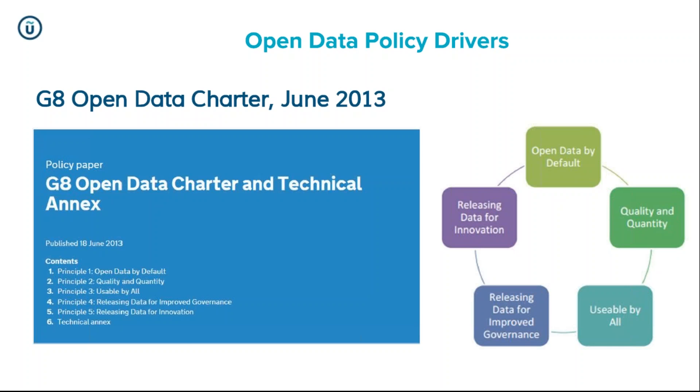That's the very core basis of open data. In Scotland we've got other pieces of legislation — we never say publish data that contravenes the Data Protection Act, so no personal data is published under open data. In March this year the Scottish Information Commissioner made open data a new class of data within the Model Publication Scheme, meaning all public sector bodies now have to indicate what data they're making available as open data, when, and where.